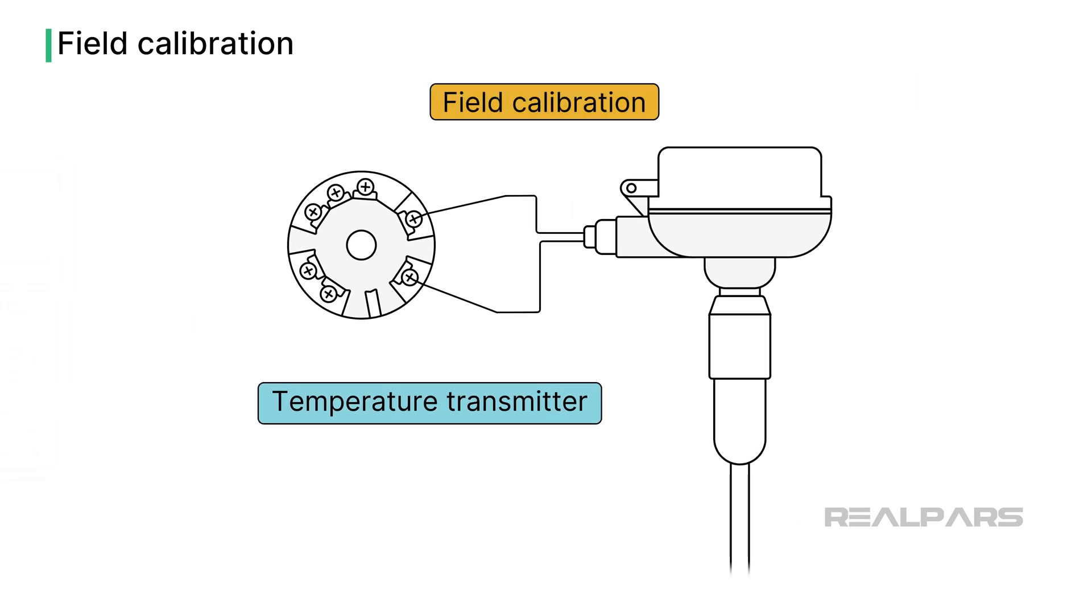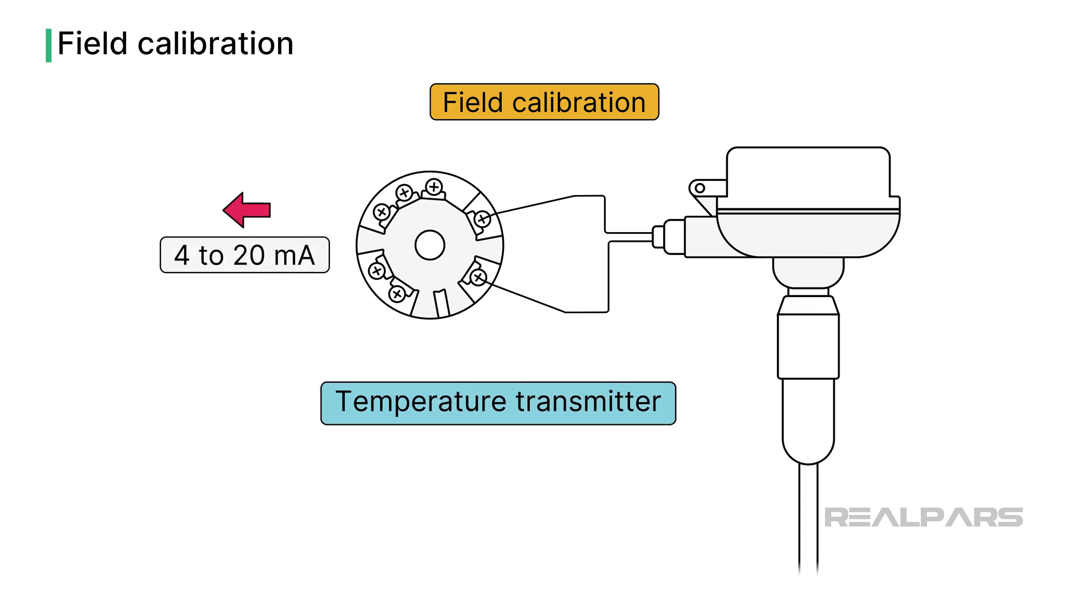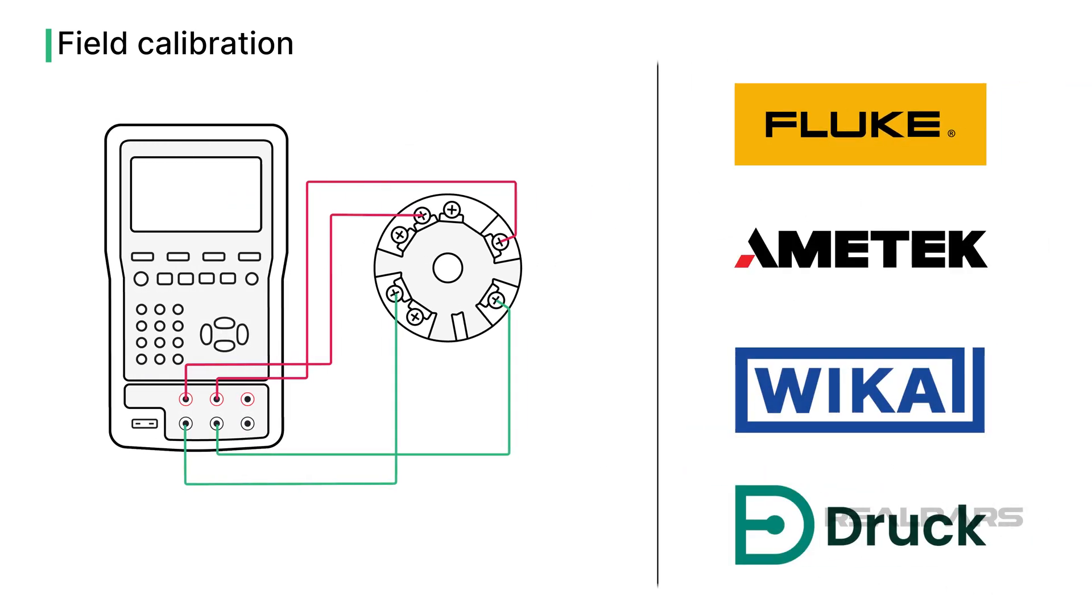Let's discuss the field calibration and subsequent adjustment of a 4 to 20 milliamp temperature transmitter connected to an RTD sensor. We will simulate the RTD sensor using a process calibrator manufactured by Fluke, Ametek, Wika, or Druck.